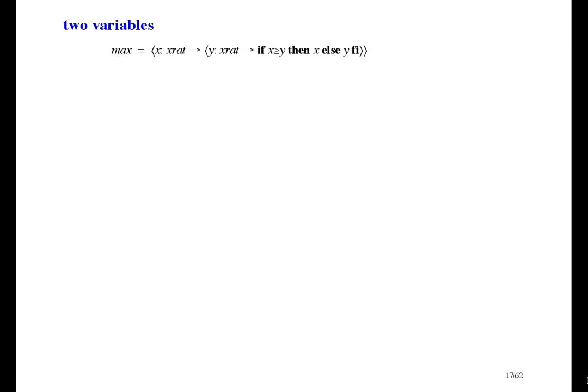A function of two variables is really just a function of one variable whose body is a function of one variable. You can see that max here is a function by the scope brackets and arrow, and its variable is x. And its domain is xrat. And its body is a function of one variable. So we can apply max to an argument, say 3. And since the result is a function, we can apply it to an argument, say 5. And find out that the max of 3 and 5 is 5.